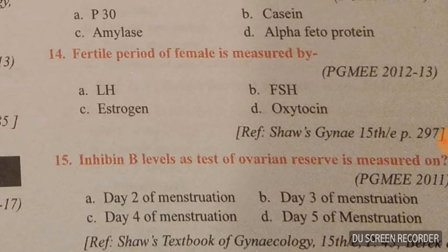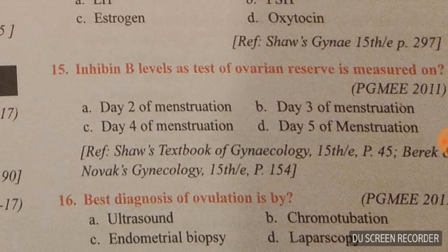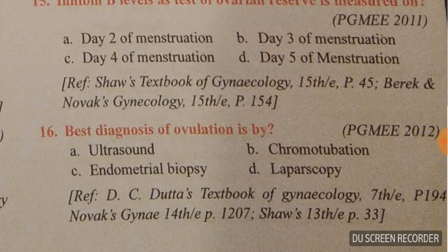Question fourteen: fertile period in female is measured by LH — luteinizing hormone represents the fertile period. Ovarian reserve is FSH; fertile period is LH. Don't get confused. Inhibin B levels as a test of ovarian reserve must be measured on day three of menstruation.